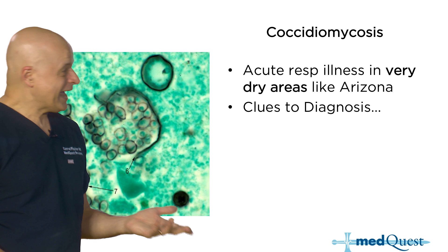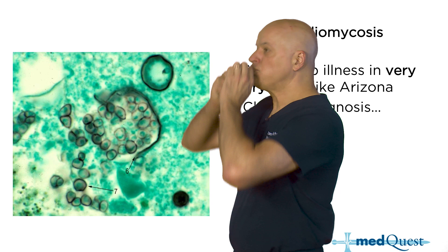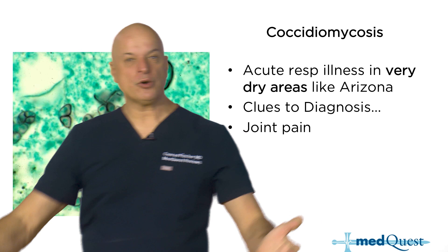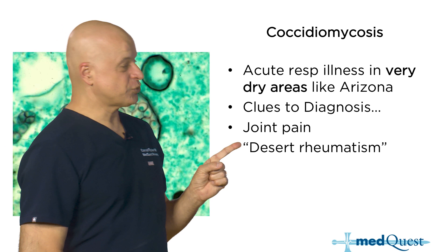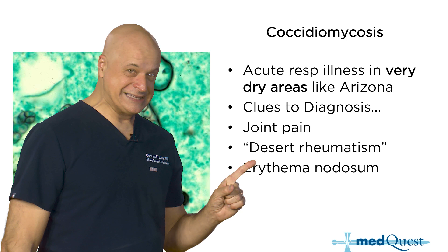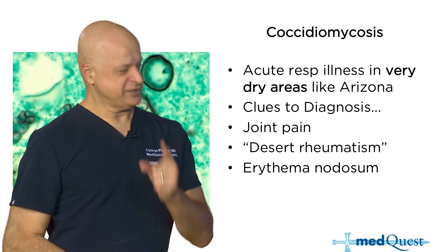These spherules break and go poof like dry dust, very widely spread. What's different about coccidioidomycosis from the other dimorphic fungi? Joint pain and skin lesion — desert rheumatism. Remember: only one S in desert, two S's in dessert, because dessert is so good you want more than one S.